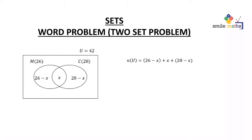the intersection, and also chemistry only. So we have n(U) giving us 26 minus x plus x plus 28 minus x.